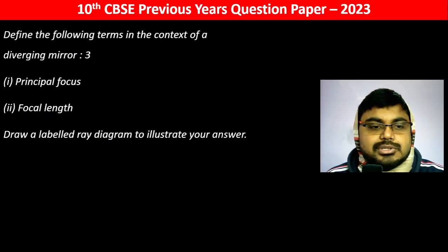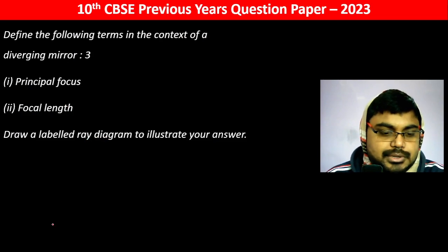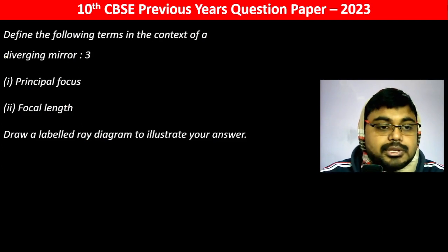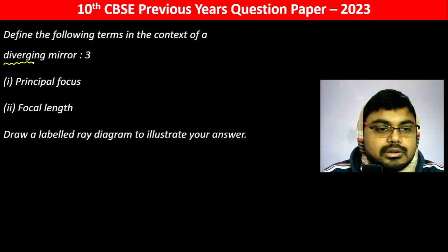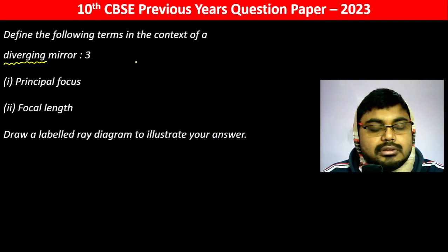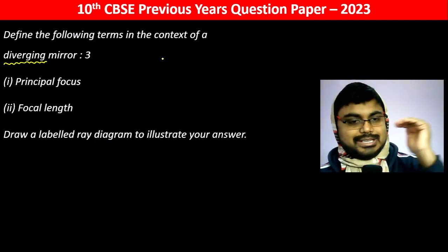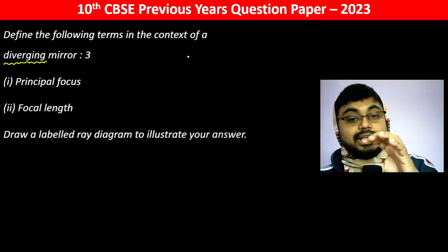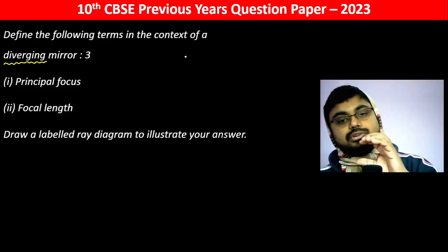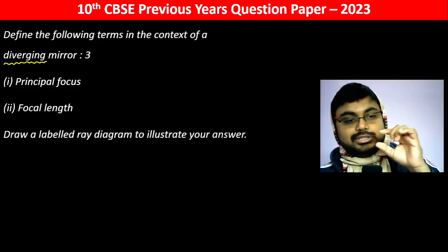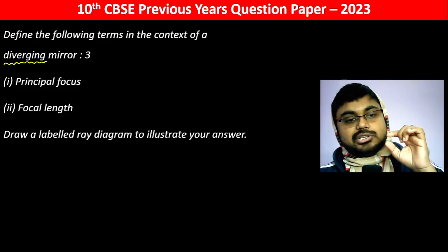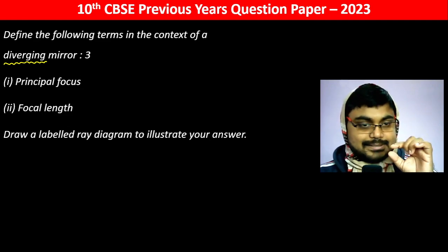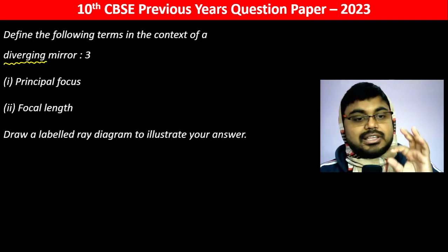Define the following terms in the context of a diverging mirror. Diverging means when the rays meet they diverge, they don't converge. They get separated more. The separation between two rays increases as there is reflection.